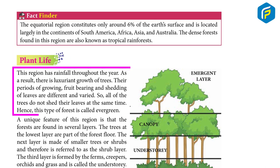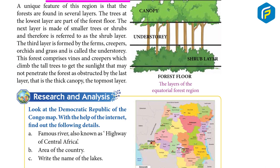This region has rainfall throughout the year. As a result, there is lots of growth of trees. Their period of growing, fruit bearing, and shedding of leaves are different and varied. So all of the trees do not shed their leaves at the same time. Hence, this type of forest is called evergreen.